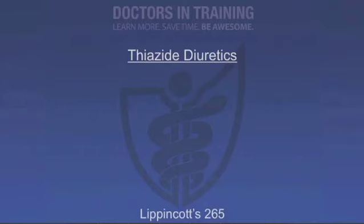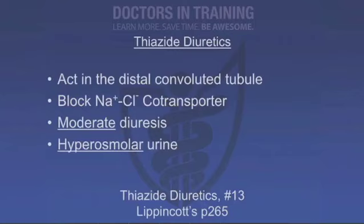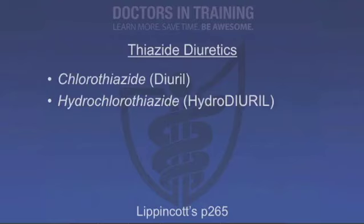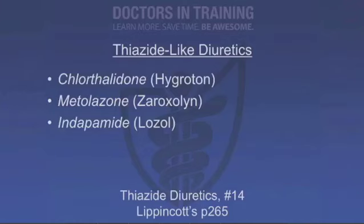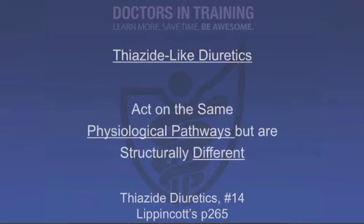Now we're going to talk about thiazide diuretics. Thiazide diuretics act in the distal convoluted tubule by blocking the sodium chloride co-transporter on the filtrate side of the membrane, promoting a moderate diuresis and leaving fairly hyperosmolar urine. The thiazides are chlorothiazide and hydrochlorothiazide — hydrochlorothiazide being the one I use most often. You'll also hear about thiazide-like diuretics: chlorthalidone, metolazone, and indapamide. They're called thiazide-like because they act along similar physiologic pathways but are structurally different.